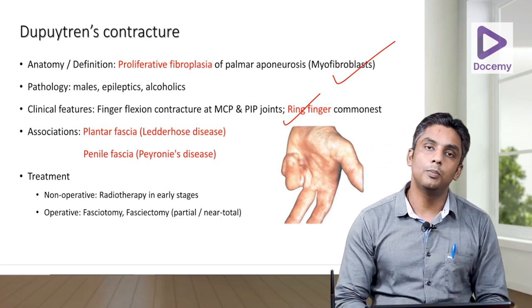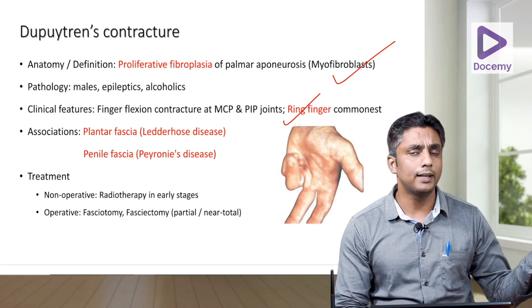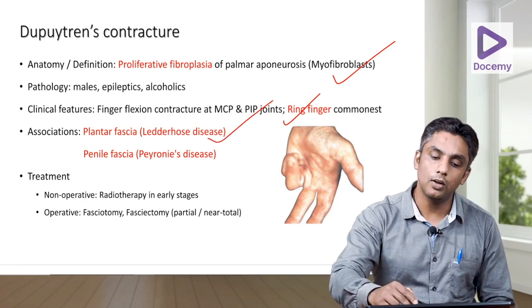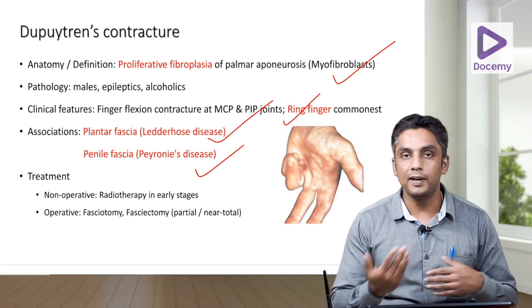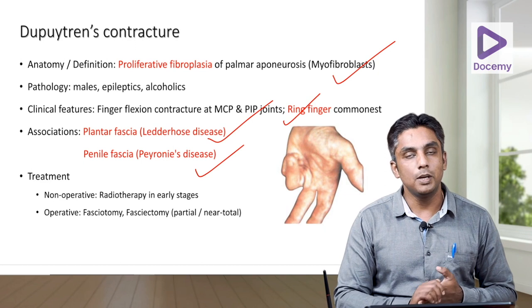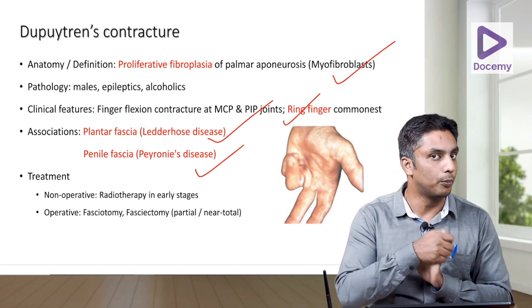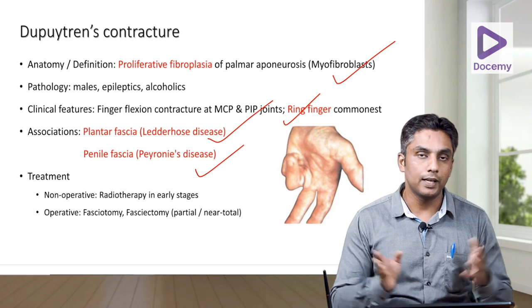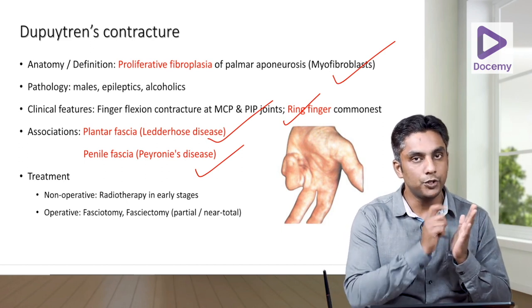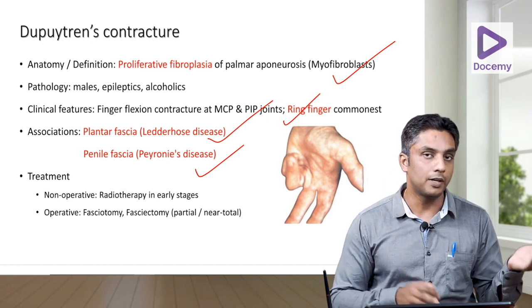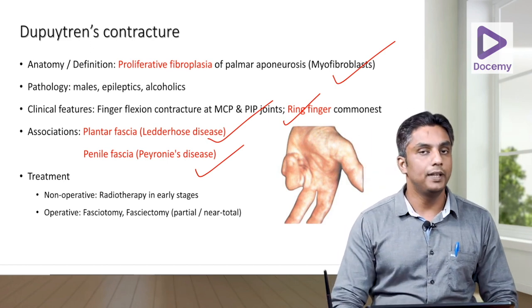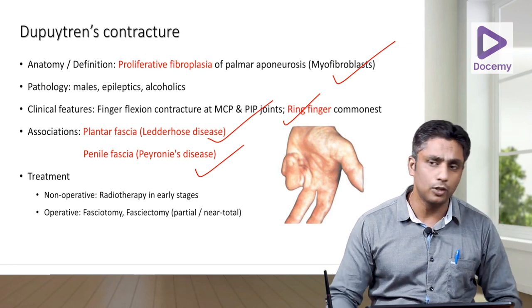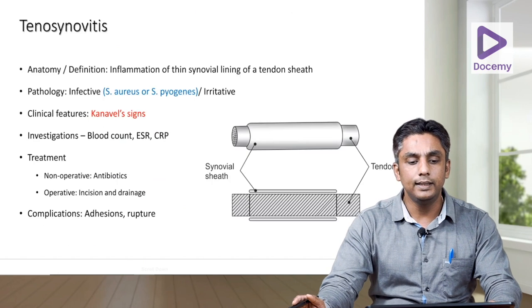Important associations: when the plantar aponeurosis is similarly affected, it is Ledderhose disease; when the penile fascia is involved, it is Peyronie's disease — both are MCQ favorites. Management includes stretching exercises and radiotherapy in the initial stages; once the deformity is fixed, fasciotomy or fasciectomy is performed — either needling (multiple punctures in the fascia) or partial/complete fasciectomy.